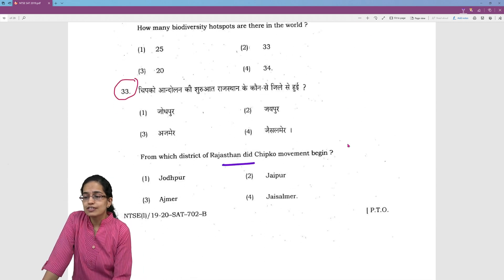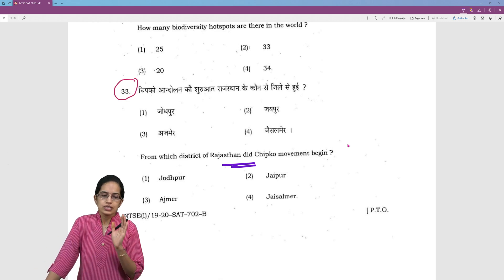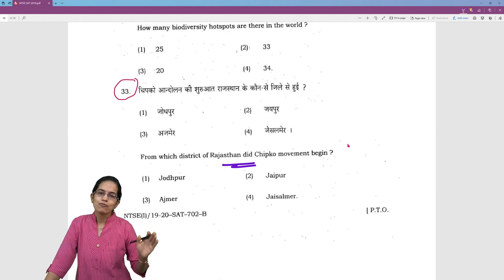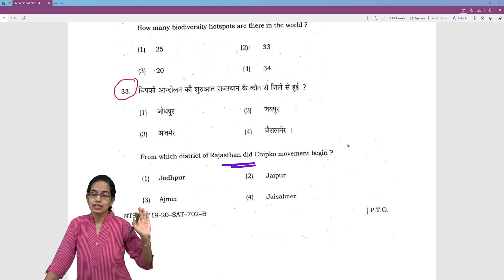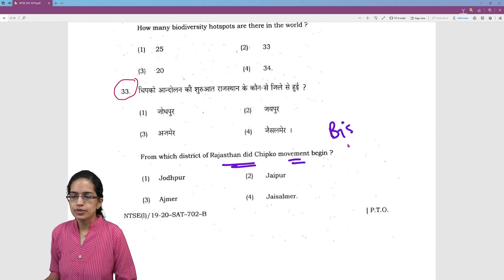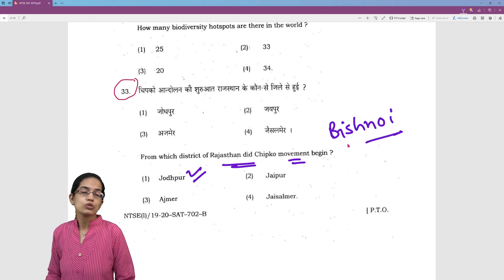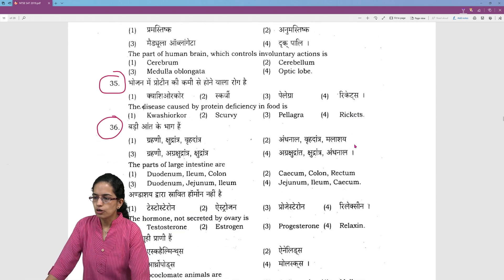This is a question specific to Rajasthan since this is a paper of Rajasthan NTSC. Similar kind of questions can come up for your state based sections. Now in Rajasthan, Chipko movement was started by Bishnois in the Khejrihali village and this Khejrihali village lies close to Jodhpur. So Jodhpur becomes the right option.